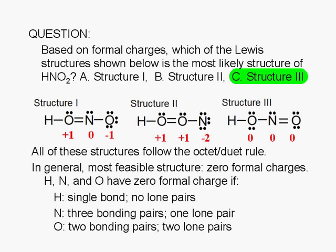Structures with like charges on neighboring atoms are very unlikely. In structure 2, neighboring oxygen atoms both have a formal charge of positive 1. That's not good.